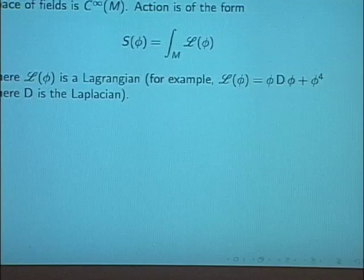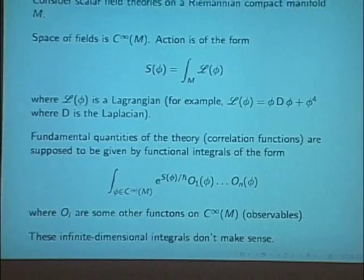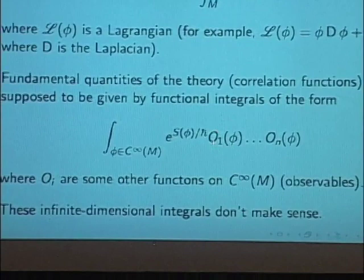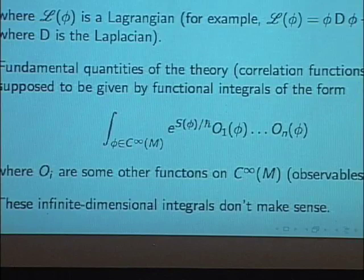The quantities physicists want to understand are functional integrals. We integrate over all fields phi with the exponential of the action, and multiply this by some observables. This quantity, if one can make sense of it, is supposed to be a probabilistic correlation function between these various observables.